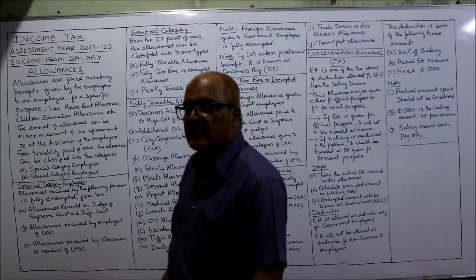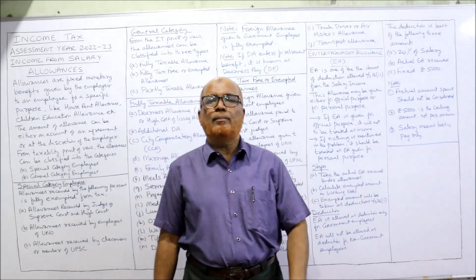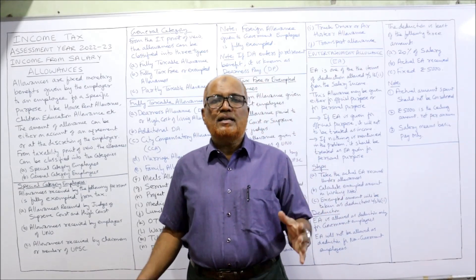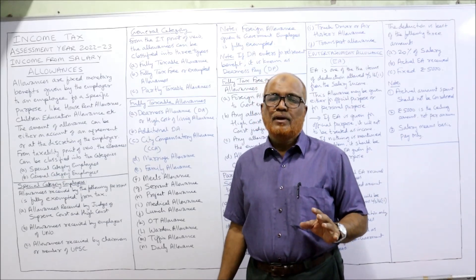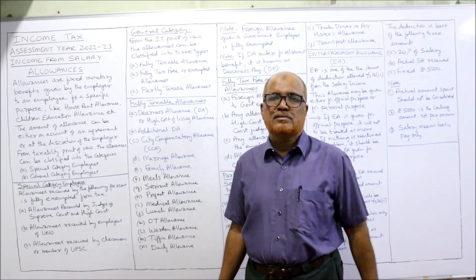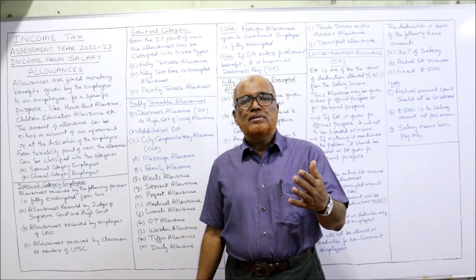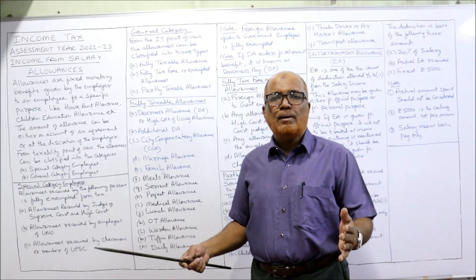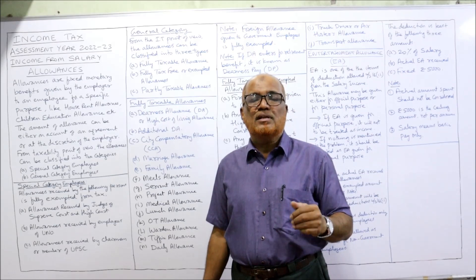Allowances are the monetary benefits given by the employer to employees for a specific purpose. Many employers give a monetary benefit along with the basic salary for a particular purpose — that is called allowances. In examination you may get a theory question asking what allowances mean, what are the different categories or types of allowances, or give examples of fully taxable allowances.